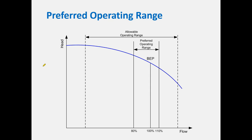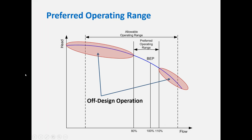When we operate outside of that preferred operating range, we refer to that as off-design operation. There was a webinar a month or so ago which talked about what actually happens inside the pump as we operate outside of that preferred operating range — things like discharge and suction recirculation which have a negative effect. That's available on the EcoBusiness YouTube page.